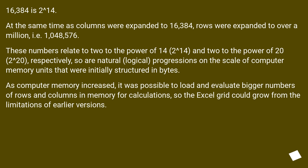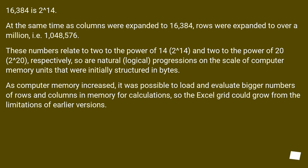16,384 is 2 to the power of 14. At the same time as columns were expanded to 16,384, rows were expanded to over a million, i.e., 1,048,576. These numbers relate to 2 to the power of 14 and 2 to the power of 20, respectively.